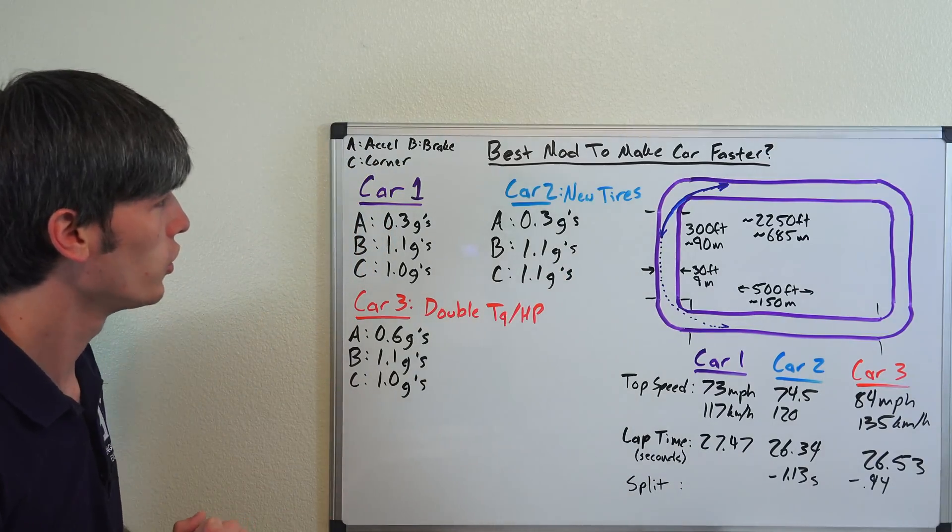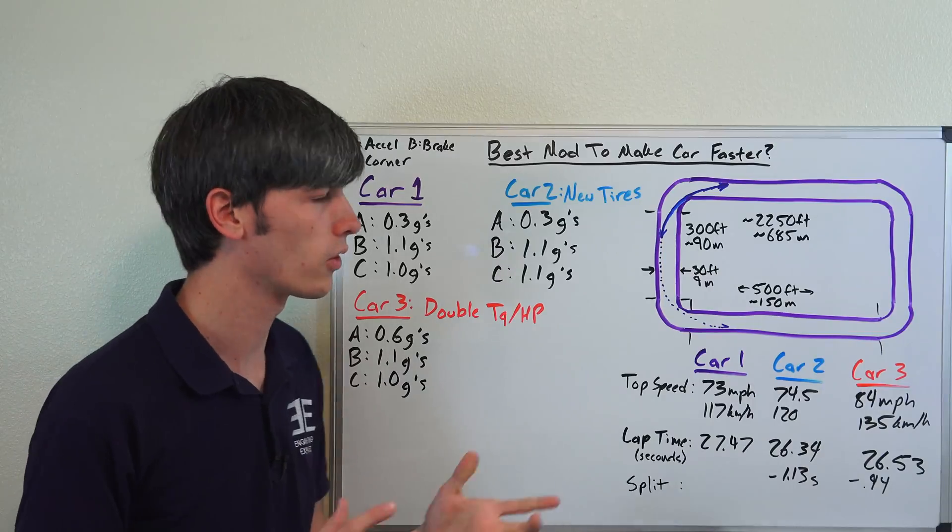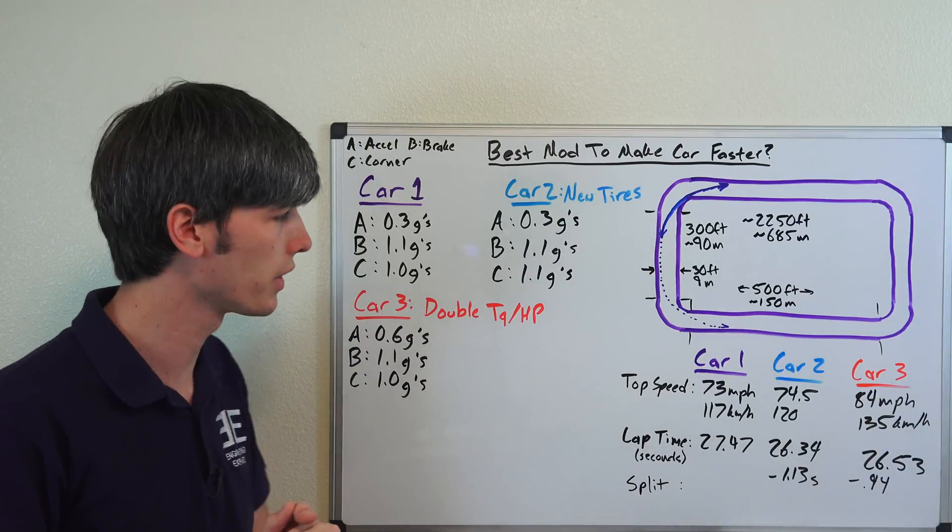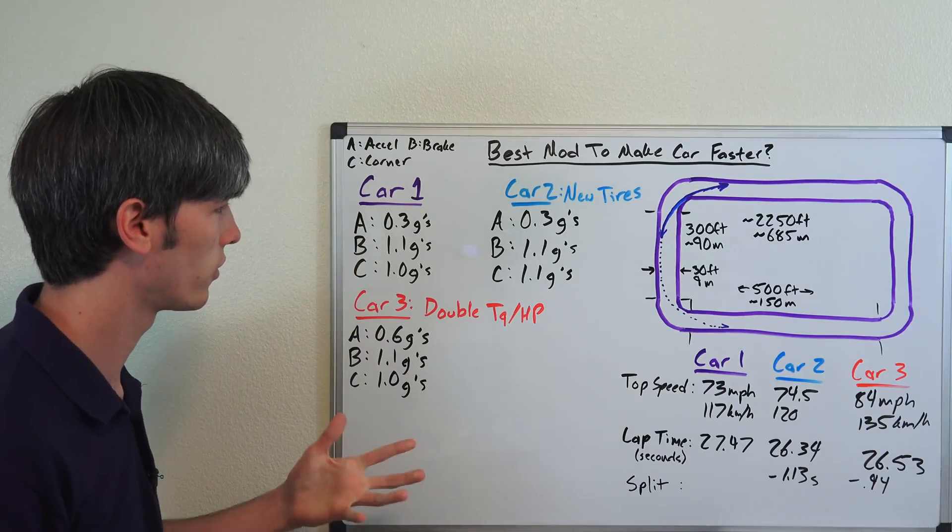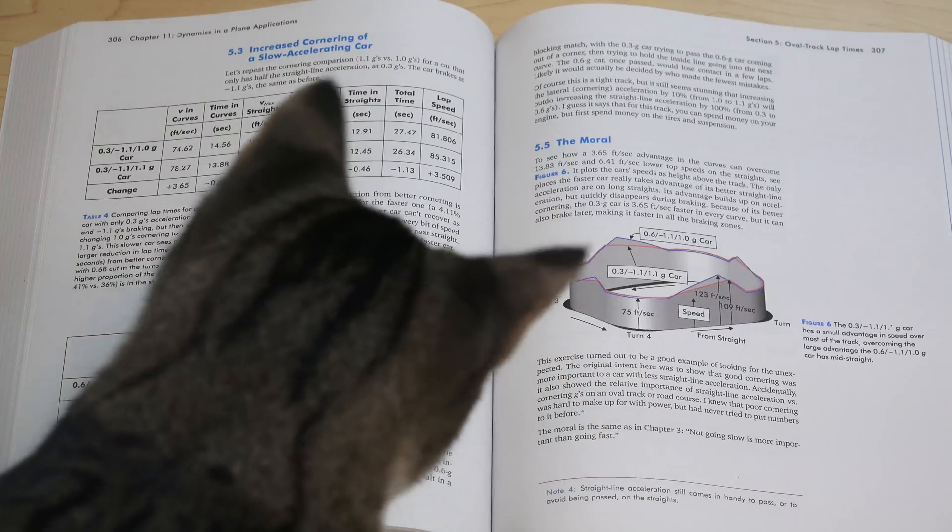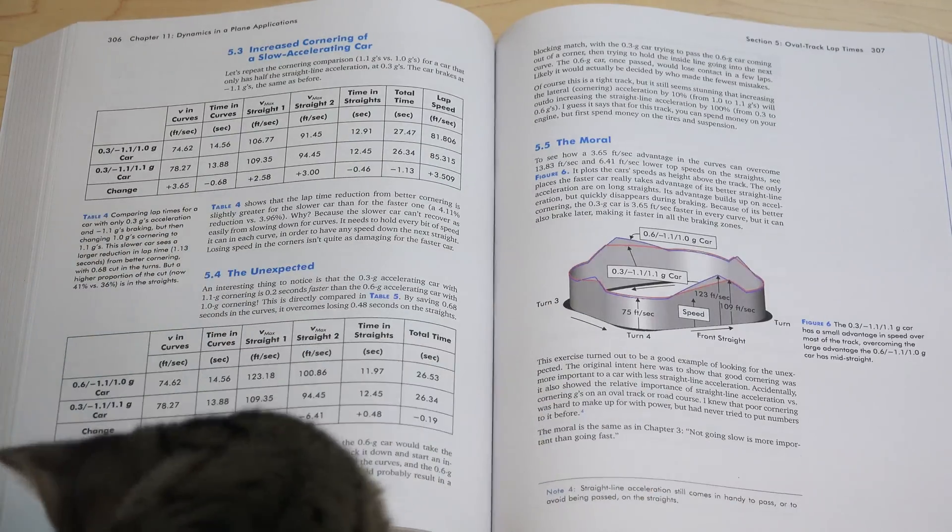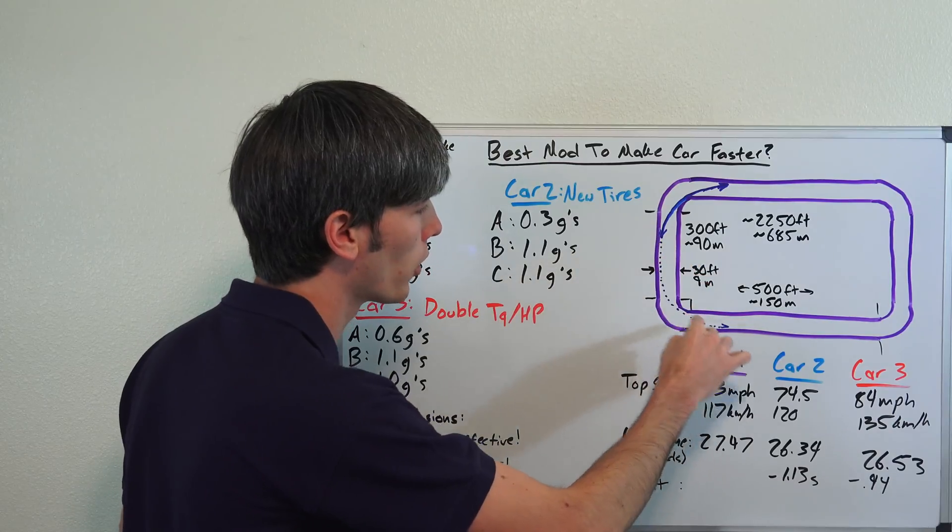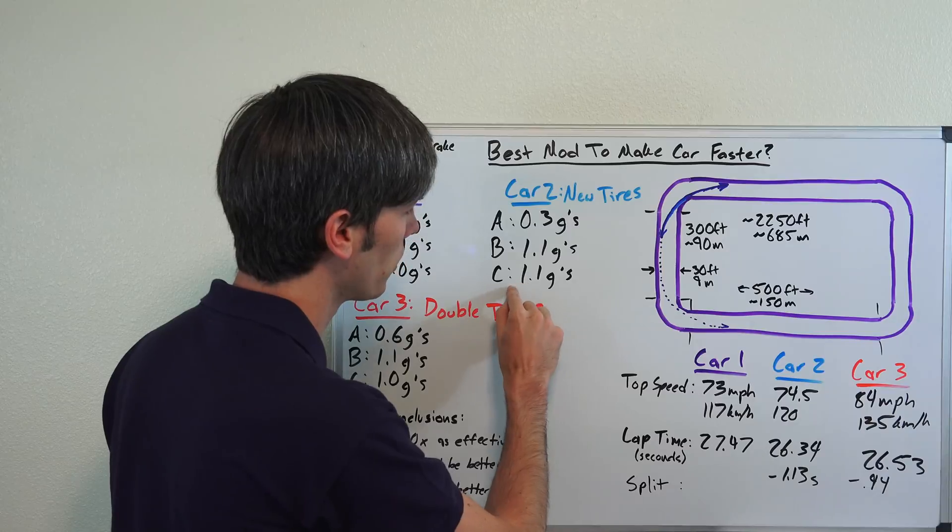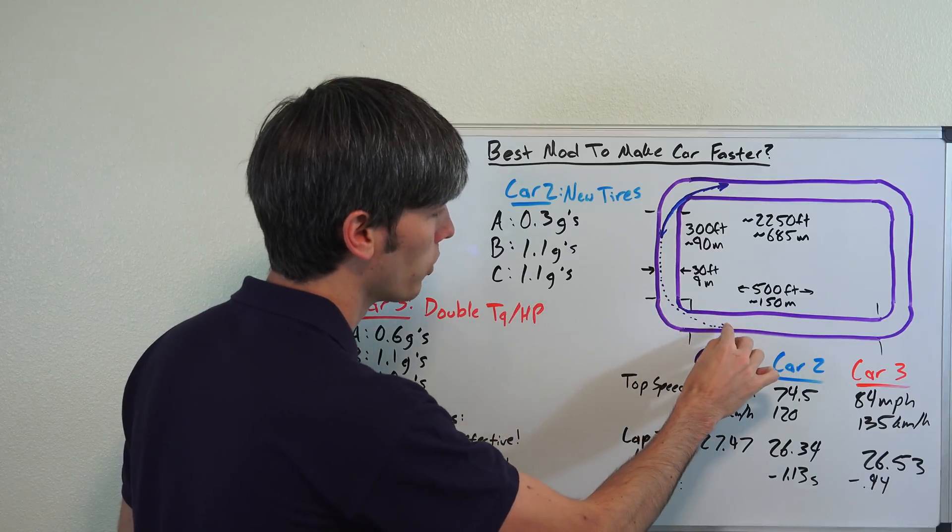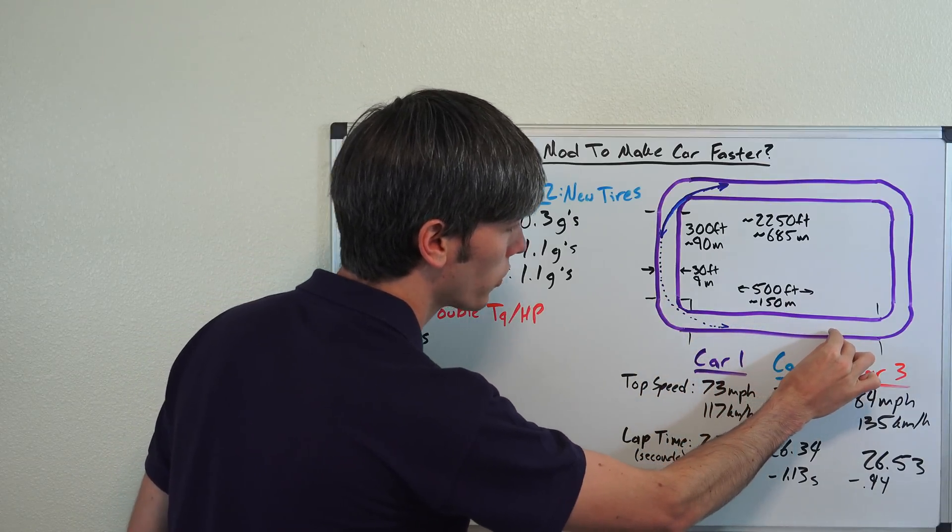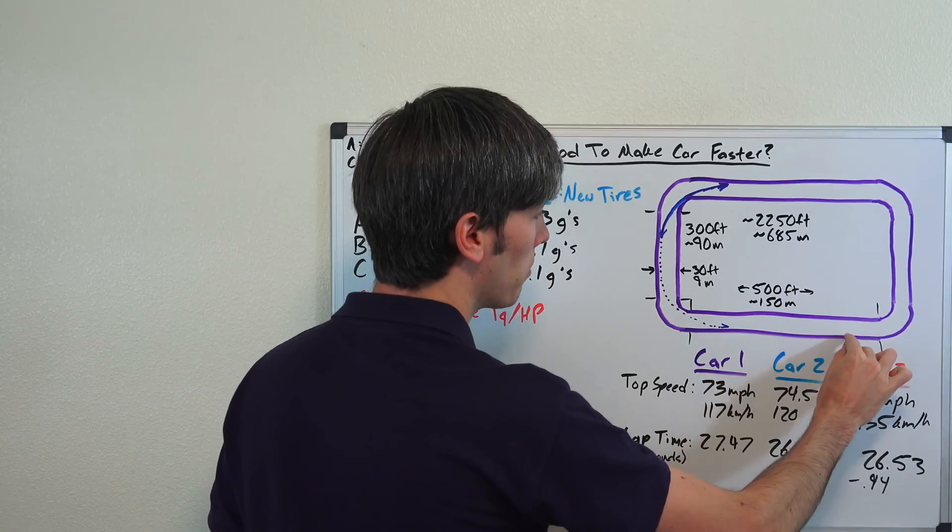Yes, this requires corners so in a straight line you're not going to really gain any benefit unless you're traction limited because you have so much power. Now one assumption that is made in doing the math of this is that when you are cornering you're doing that at a constant speed. So you have a constant speed based on your lateral G's, and then you accelerate once you get to the point where you've straightened out.